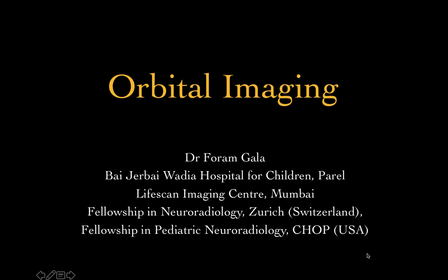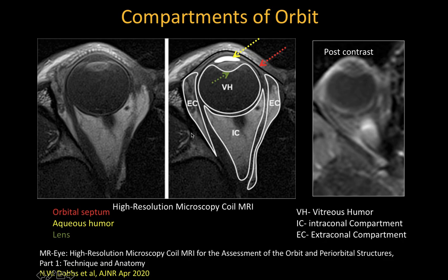Hello friends, welcome back. In the last lecture we saw basic anatomy of the orbit along with the compartmental anatomy. Today I'm going to discuss the first compartment, that is the globe. The globe is further divided by the lens into aqueous humor anteriorly and vitreous humor posteriorly. The second compartment is the optic nerve and optic nerve sheath. The third compartment is the conal and intraconal, formed by the muscle cone.